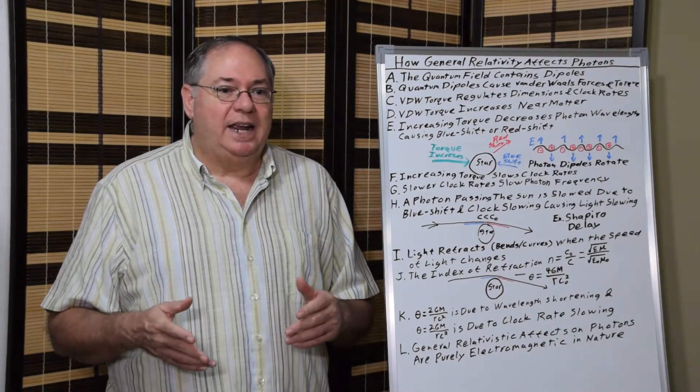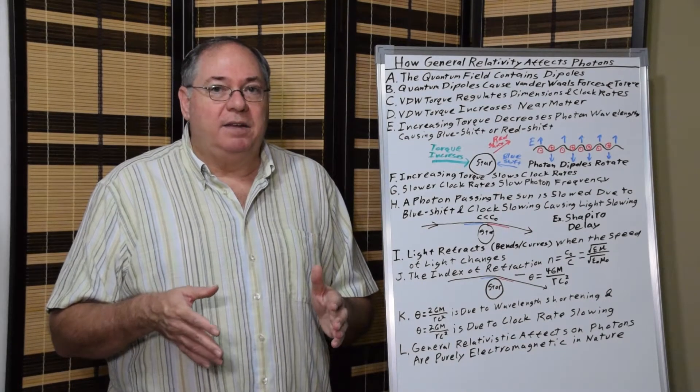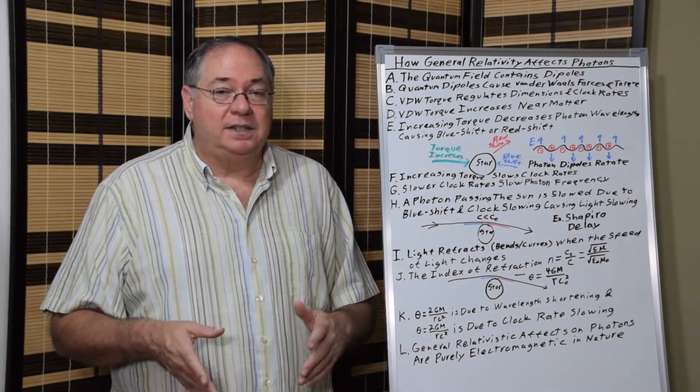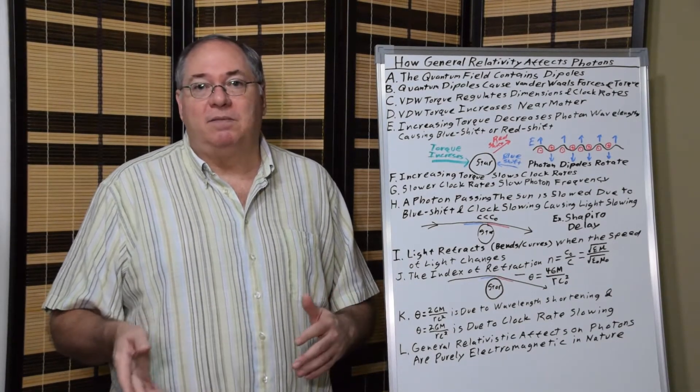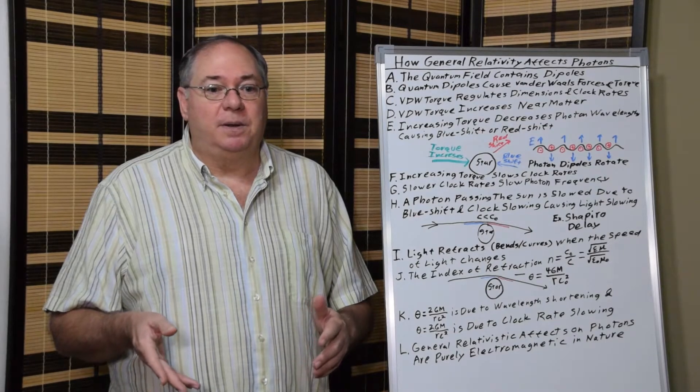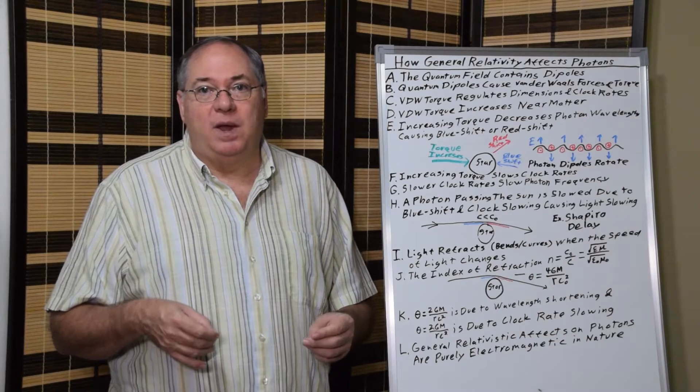Interestingly, Einstein actually derived the idea that if you change the dielectric constant in space due to matter, you could account for the bending of light due to the effect on the wavelength, the length contraction.